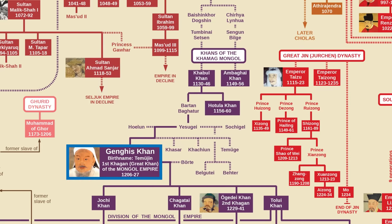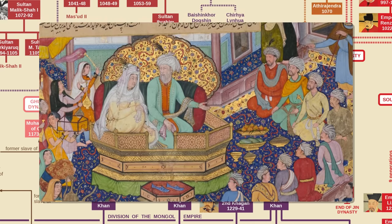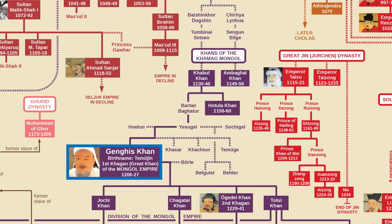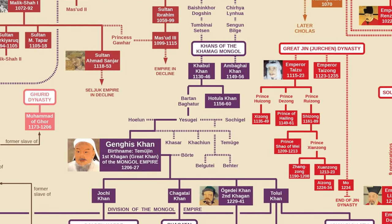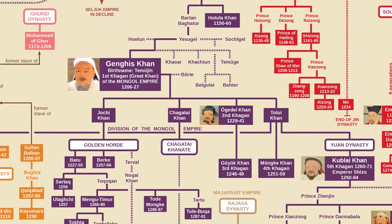He had many sons, but keeping with Mongol tradition, only the sons of his chief wife were considered heirs. Genghis and Borte had four sons. The eldest, Jochi, was born nine months after Borte's return from her captors, so there was a question mark on his parentage — though Genghis never treated him as if he wasn't his son. Jochi and his younger brother Chagatai famously didn't get along because of this very issue. Genghis Khan himself died in 1227 during a campaign against the Western Xia dynasty; the exact cause is debated, possibly a fall from a horse. Per his wishes, he was buried in an unmarked grave near his birthplace.